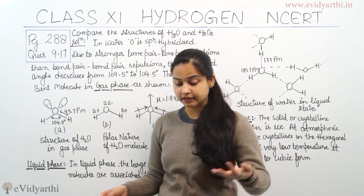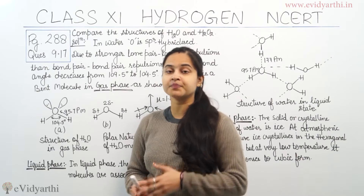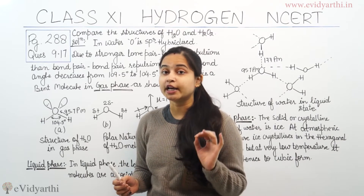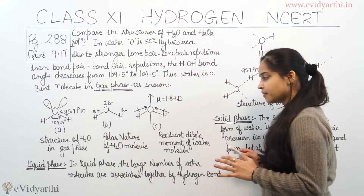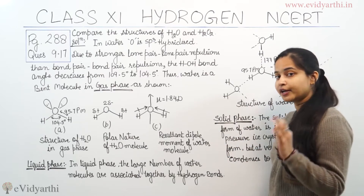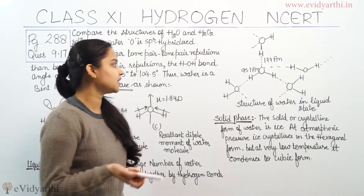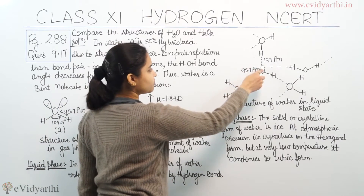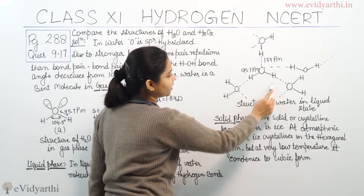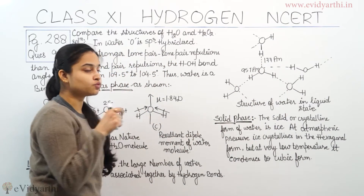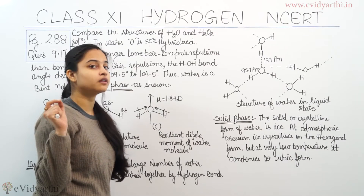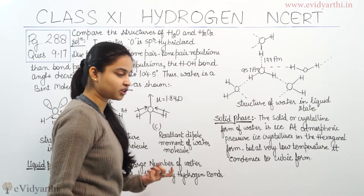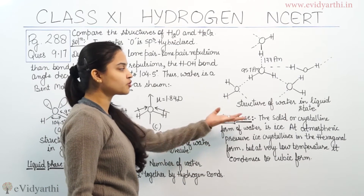In liquid phase, there is a large network where many water molecules are associated together by hydrogen bonding. One water molecule is linked to another water molecule through hydrogen bonds. The hydrogen bonding length is 177 pm and the OH bond length is 95.7 pm. That is the structure of water in the liquid phase.